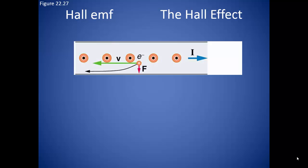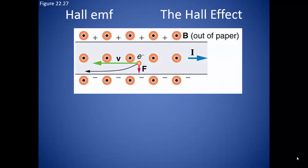Since the negatives accumulate at the bottom, this leaves the positive alone at the top, and a potential difference is created within the wire.